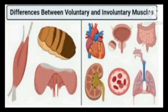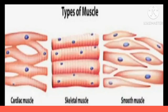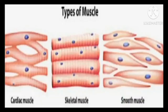Involuntary muscles are muscles which do not function on our will. Examples: the muscles of organs like the stomach, intestine, and heart are involuntary muscles. Functions such as breathing, blood circulation, and digestion do not depend upon our will.